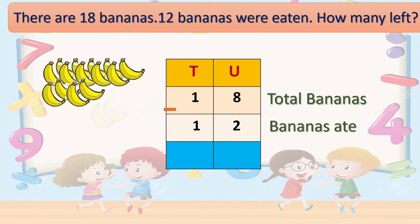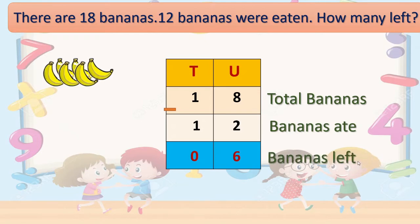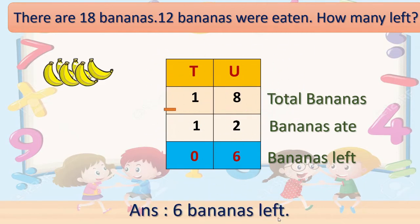Now we will subtract 12 from these 18 bananas. Count: 2, 4, 6, 8, 10, 12. Now, dear children, count the bananas left. 2, 4, 6 — only 6 bananas left. So in the unit place we write 6 and in tens place 0. You know that 8 minus 2 is 6, and 1 minus 1 is 0. So our answer is 6 bananas left.